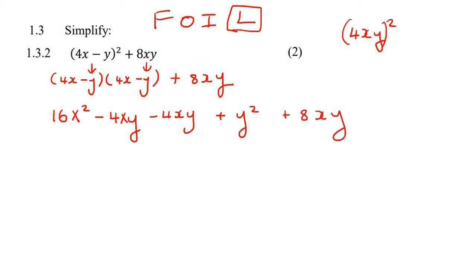Now we're going to put all the ones that are the same together. So here we have an xy. Here we have an xy. And here we have an xy. They're going to go together. So we're going to end up with 16x squared.